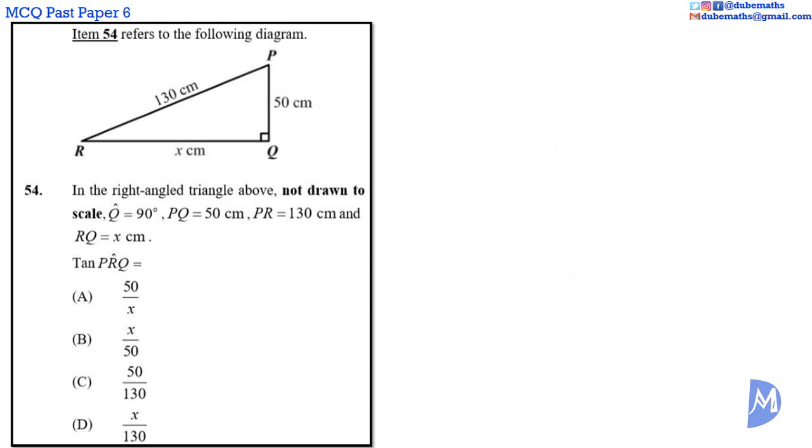Question 54. We are asked to determine tan of angle PRQ. Angle PRQ is this angle. The side opposite to the right angle is the hypotenuse. With respect to angle PRQ, side PQ is opposite, and side RQ is adjacent.